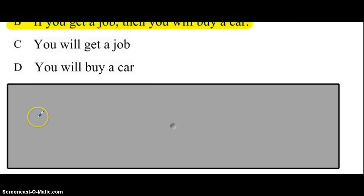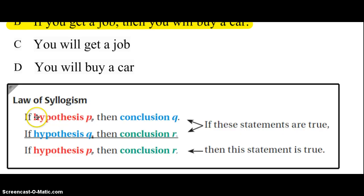This type of reasoning is deductive, and specifically it is called the law of syllogism. The law of syllogism states that if hypothesis P then Q, and if Q then R, then those Qs cancel each other out and we can say if P, then R.